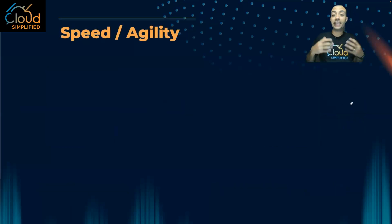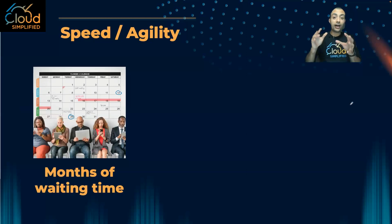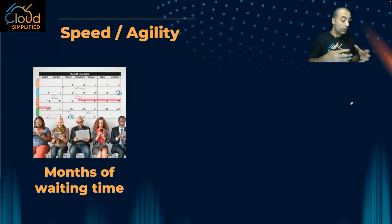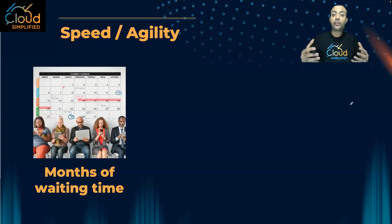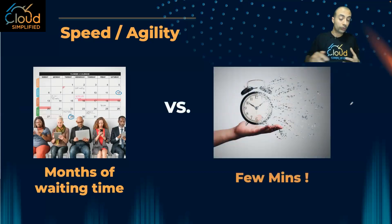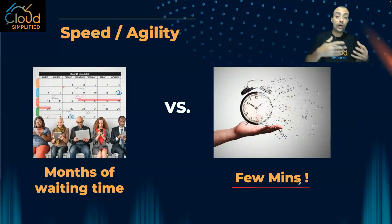Point number five is speed and agility, and that's a big differentiator on the cloud. If I need to buy equipment for my physical data center, the industry average waiting time — especially after COVID and the supply chain and semiconductor challenges — can be a few months just to get equipment on site, then another few months for racking, stacking, cabling, tagging, and installing virtualization before I can even install my application. But on the cloud it is literally a few minutes — I'll be doing hands-on later to show you how you can have a server up and running in minutes.